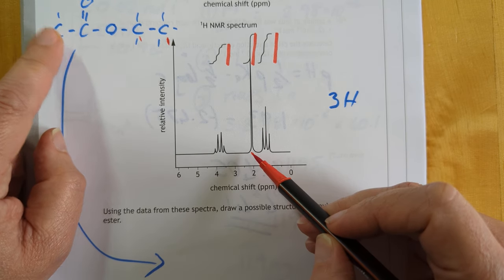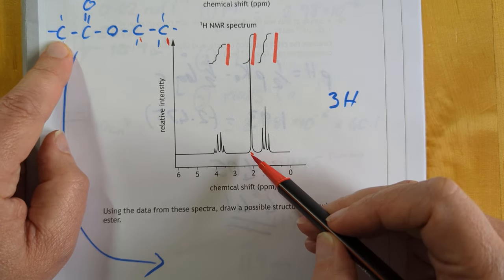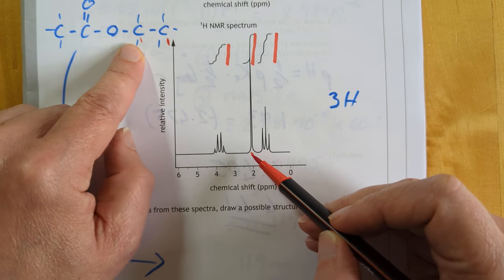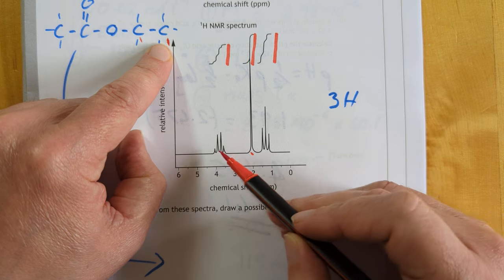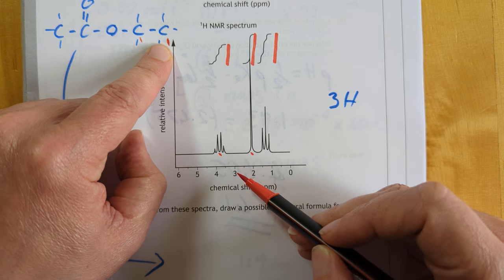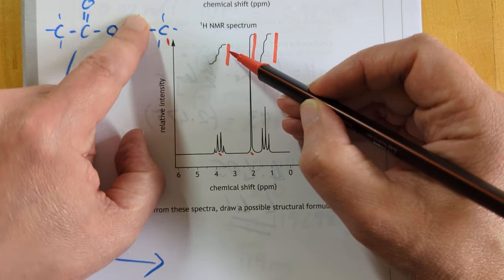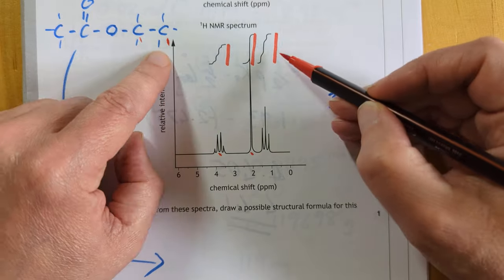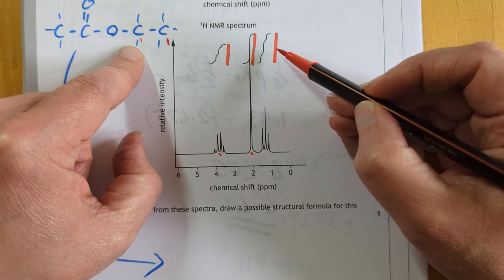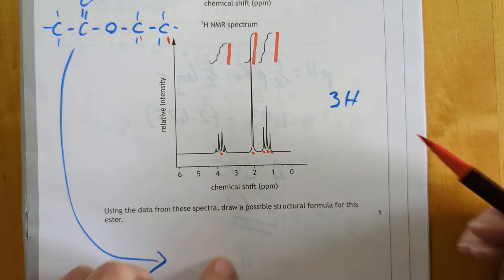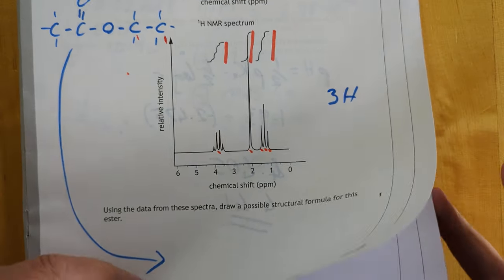So this peak here corresponds to these three H's, that's why it's not split. This one here is sitting next to a carbon with three, so it will be split into four, which matches up with that one, and also matches up with the fact there's only two hydrogens, so that's perfect. And this one here, we're back to three hydrogens, and they are sitting next to a carbon with two, so it will be split into three, and that's why we see one, two, three peaks. Boom. That's your answer. Only, you can't be lazy, you have to put the hydrogens in.